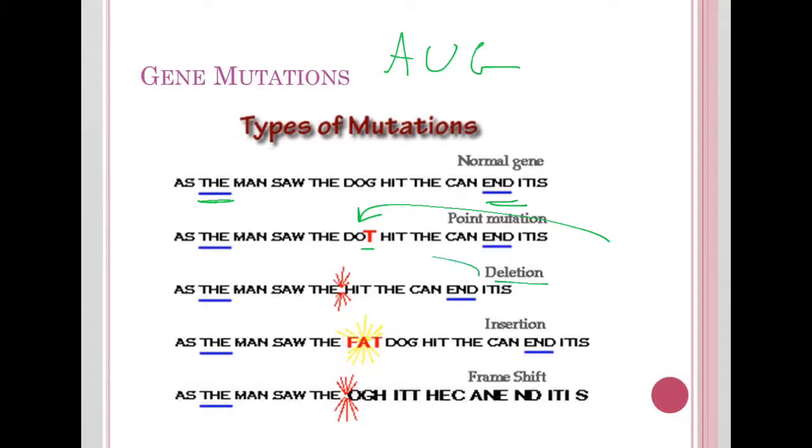Here's a deletion of a whole codon, so a deletion of three whole nucleotides: the man saw the hit the can. So all the other ones haven't changed, but the order has changed a little bit. Here's an insertion of a whole codon: the man saw the fat dog hit the can. Again, changed a little bit.